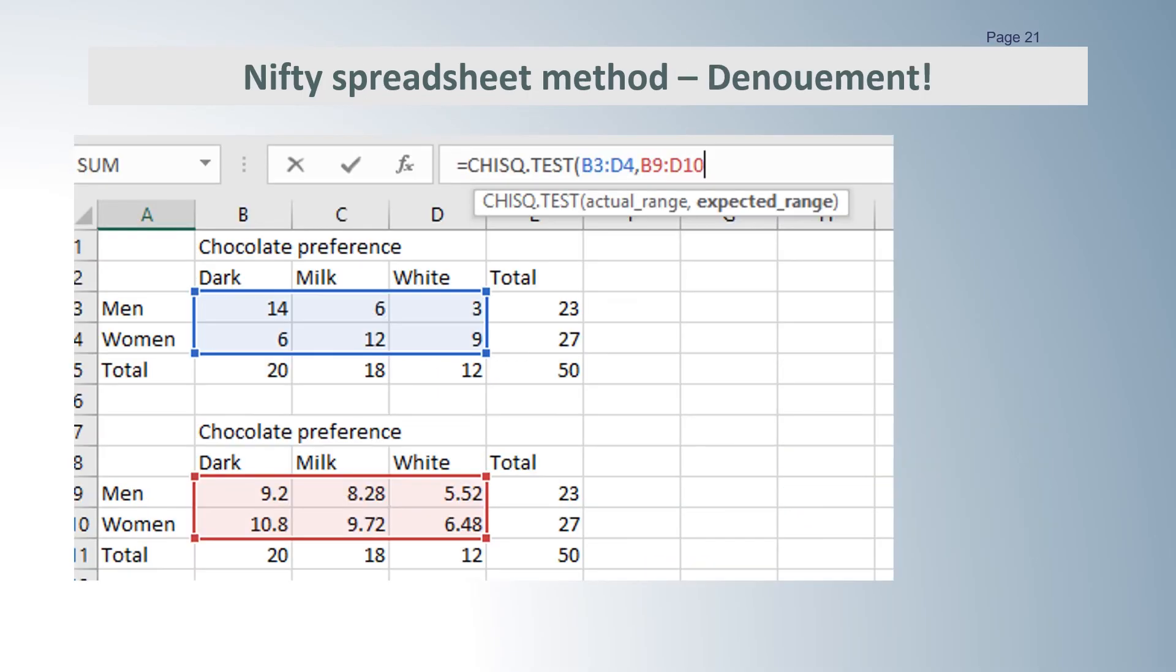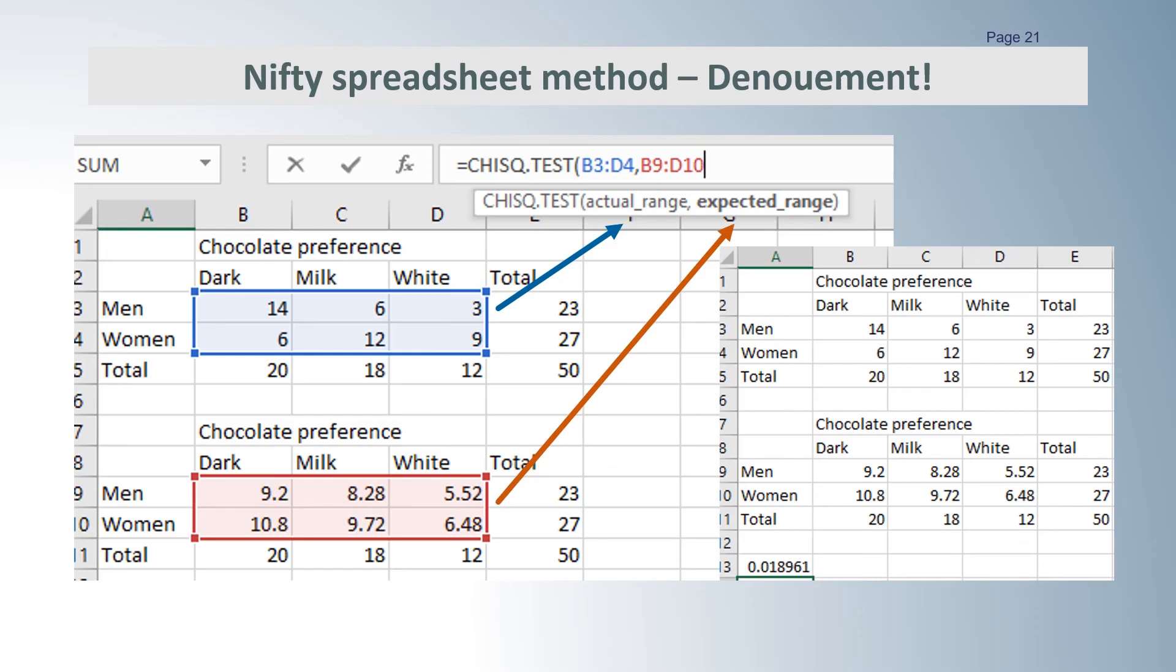Now this is where the spreadsheet is so cool. You use the formula equals chi-squared dot test. You enter the actual or observed range and the expected range and the output is the p-value. We round it to 0.019, the same as what we got before.